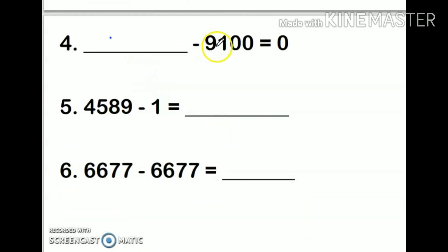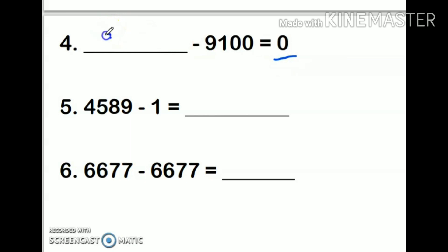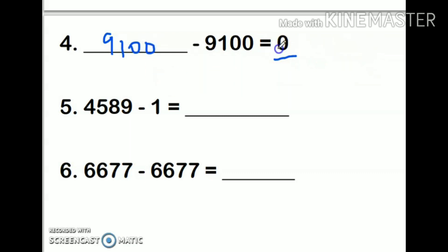Next: ___ minus 9100 equals 0. My difference is 0, so I will subtract the same number from itself. So the answer in the blank is 9100, so that my answer is 0.